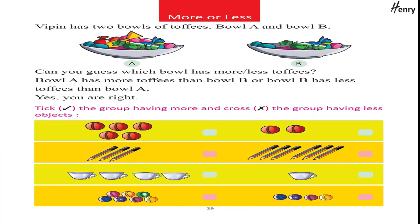More or less. Wippin has two bowls of toffees — bowl one and bowl two. Can you guess which bowl has more or fewer toffees? Bowl A has more toffees than bowl B, or bowl B has less toffees than bowl A. Take the group having more and cross the group having less objects.